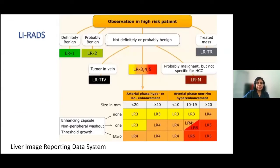Regarding LI-RADS, many of you may have seen this reported on CT or MRI. LI-RADS 5 is the category which is confirmatory of HCC. This represents the diagnostic probability of hepatocellular carcinoma according to imaging findings.